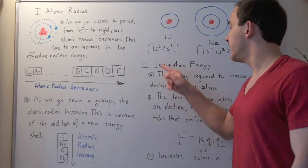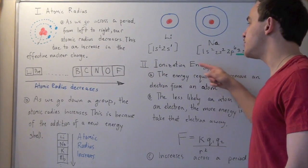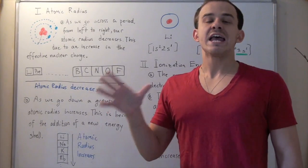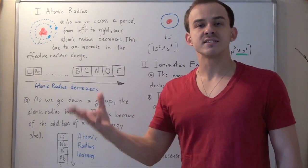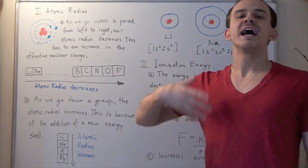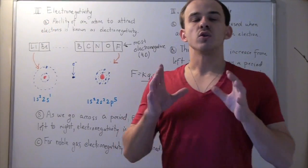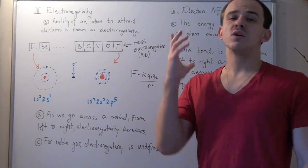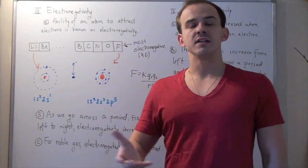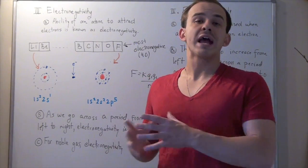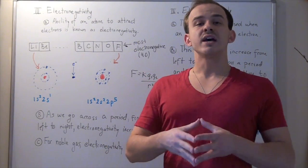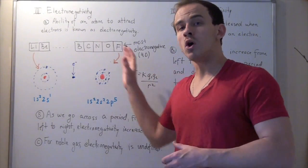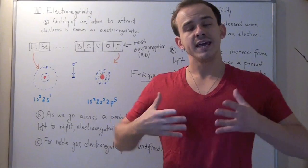To wrap up: the higher your ionization energy is, the less likely you are to give up electrons. We'll see that this directly translates into something called electronegativity. Let's look at the third periodic trend — electronegativity — which is simply the ability of atoms to accept or attract other electrons. As we go from left to right across the period from lithium to fluorine, our electronegativity increases.